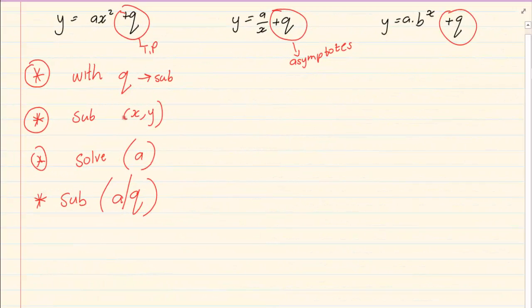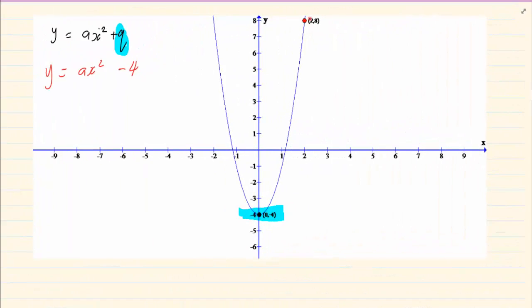The next step is we're going to substitute any random point. So what point have they given us? They've given us 2 and 8. We now substitute 2 and 8 into x and y. So we have 8 equals a, open brackets, 2 squared minus 4.